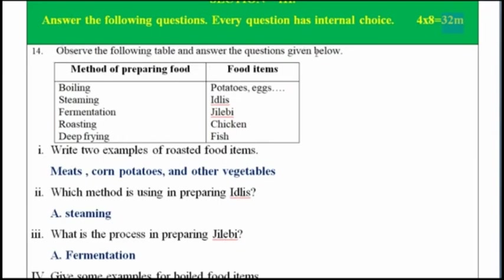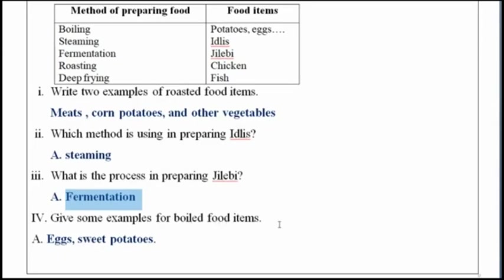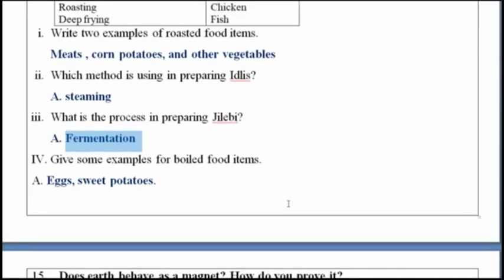Question 14: observe the following table and answer the questions below. The table covers boiling (potatoes, eggs), steaming (idlis), fermentation (jalebi), and roasting (chicken, fish). Write two examples of roasted food items: meat and corn. Which method is used in preparation of idlis? Steaming. What is the process in preparing jalebi? Fermentation. Give examples for boiled food items: eggs and sweet potatoes.